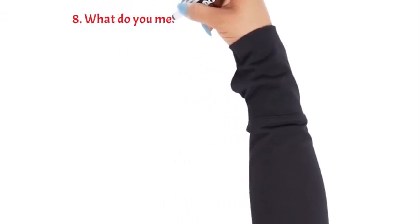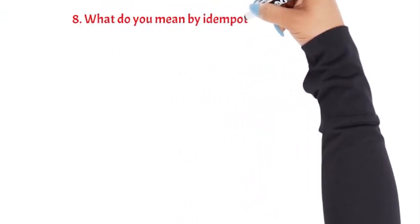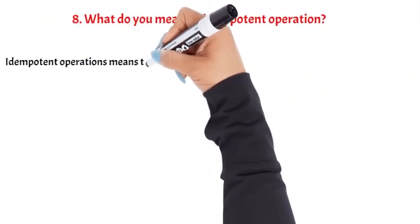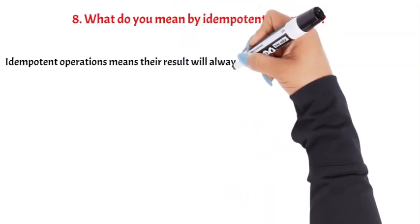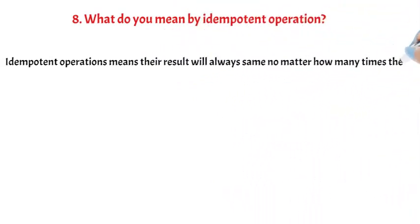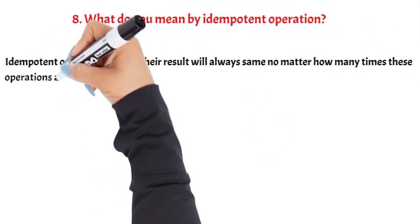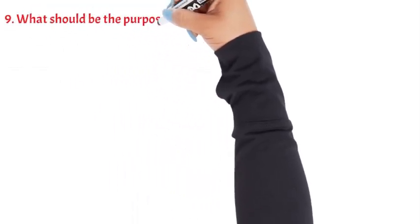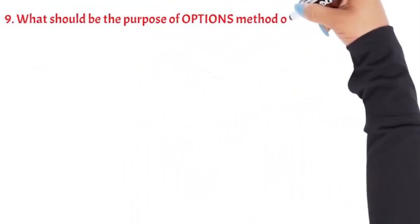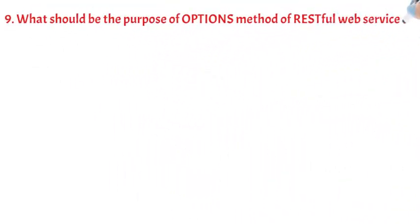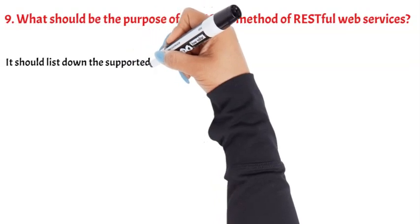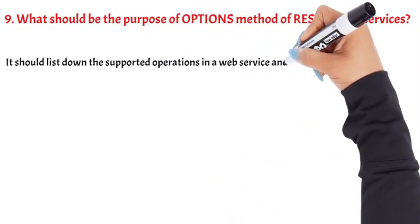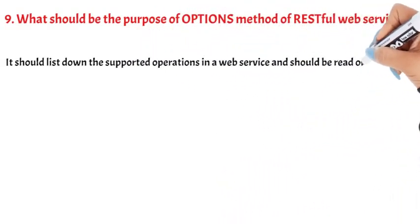Question 8: What do you mean by idempotent operation? Idempotent operations means their result will always be the same no matter how many times these operations are invoked. Question 9: What should be the purpose of the OPTIONS method of RESTful Web Services? It should list down the supported operations in a web service and should be read only.